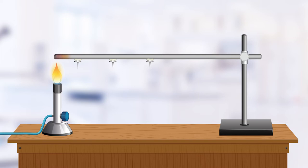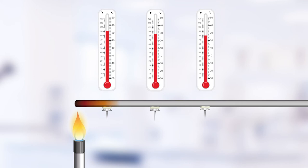When the burner is lit, heat moves along the rod from left to right. This occurs as heat always moves from the region that is hottest to the region that is coldest.